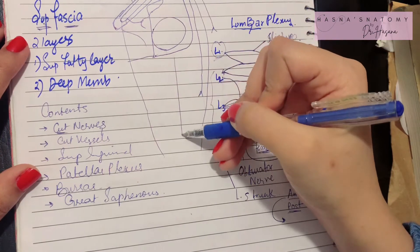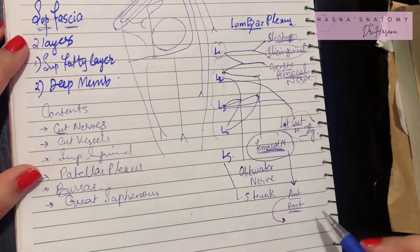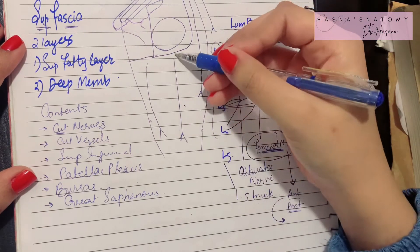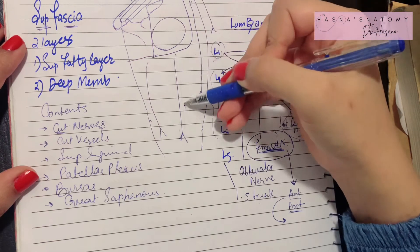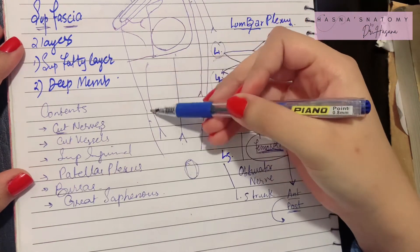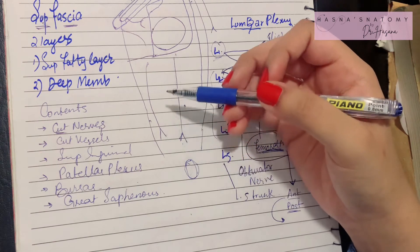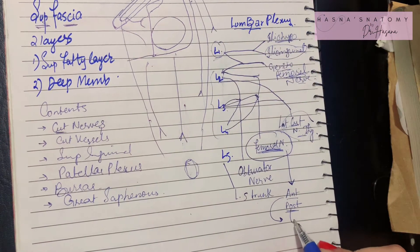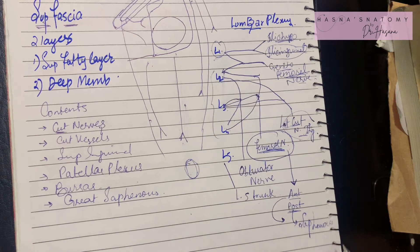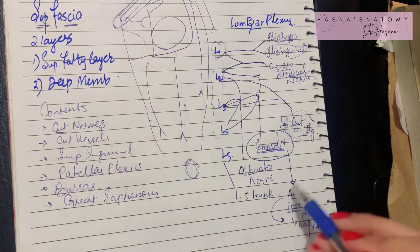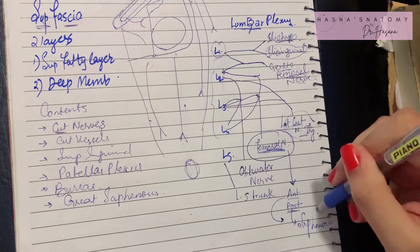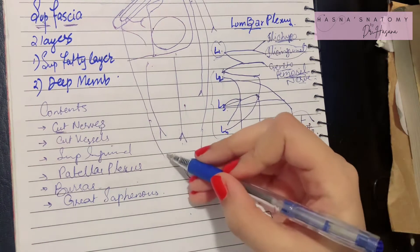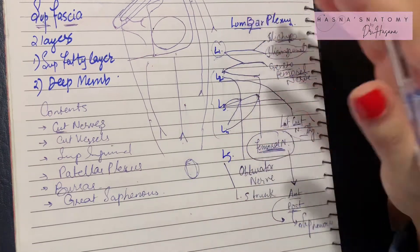From the anterior division of the femoral nerve emerge two nerves: the intermediate cutaneous nerve of the thigh and the medial cutaneous nerve of the thigh. The intermediate cutaneous nerve supplies the skin between your sartorius muscle and your knee. The medial cutaneous branch supplies the medial side of the thigh. The posterior division of the femoral nerve gives the saphenous nerve, which supplies the entire medial part of your leg.